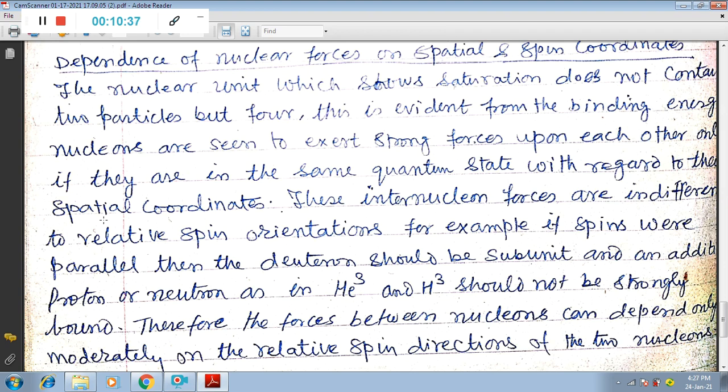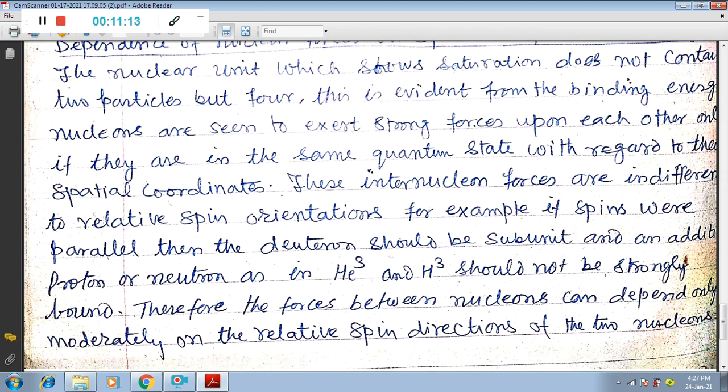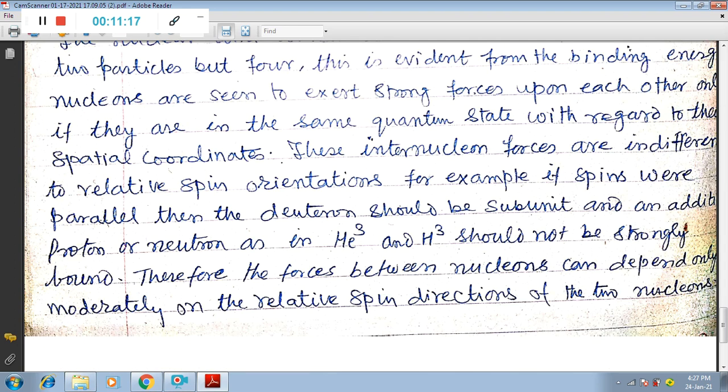For example, if spins were parallel, then the deuterium should be subunit, and an additional proton or neutron in helium-3 and H-3, that is tritium, should not be strongly bound. Therefore, the forces between nucleons can depend only moderately on the relative spin directions of the two nucleons.